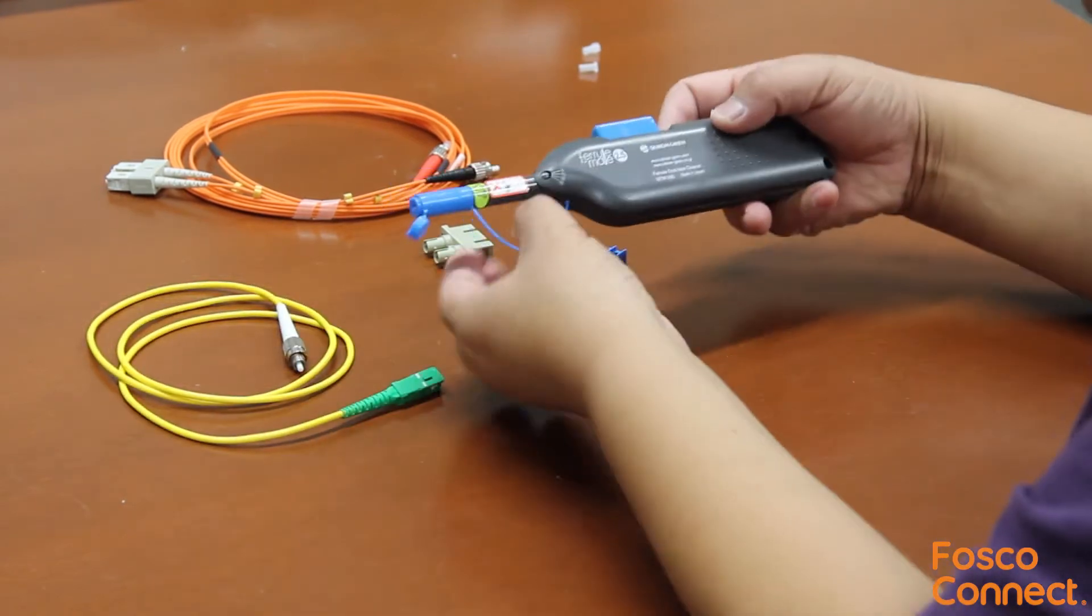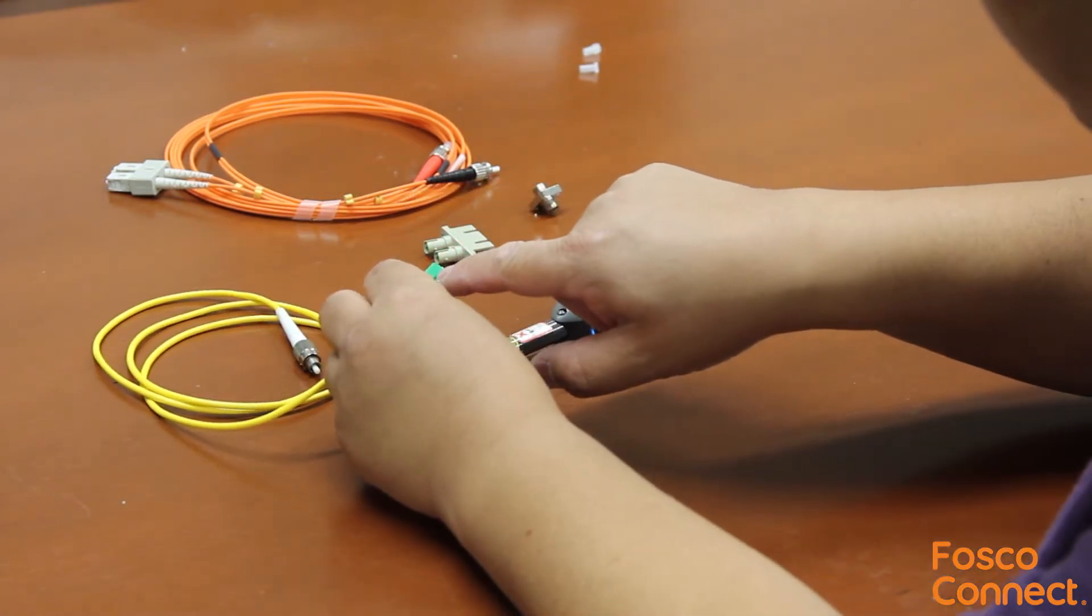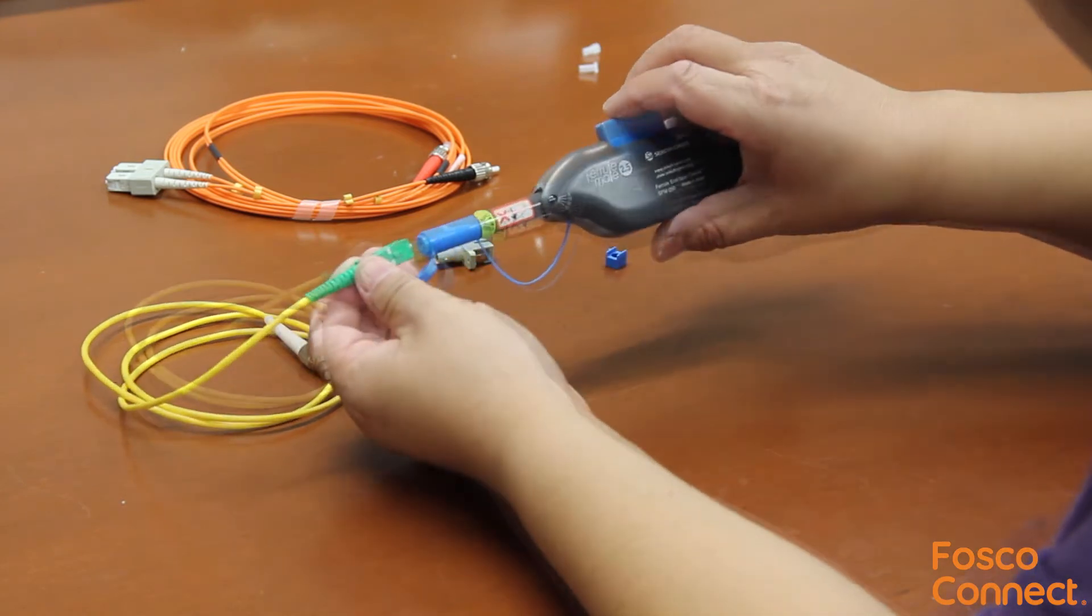There is a key label on the cleaner. You need to make sure that you keep the APC connector key aligned with this label. That is required to correctly clean an APC connector.